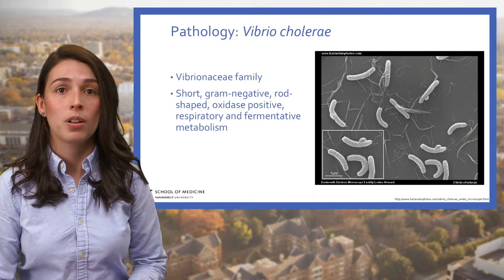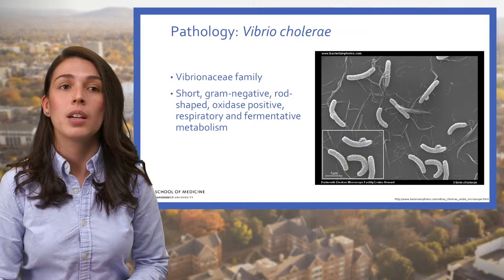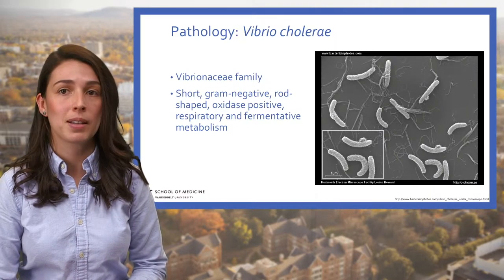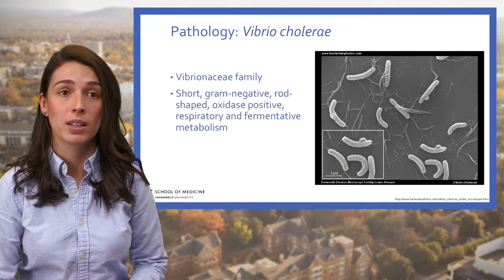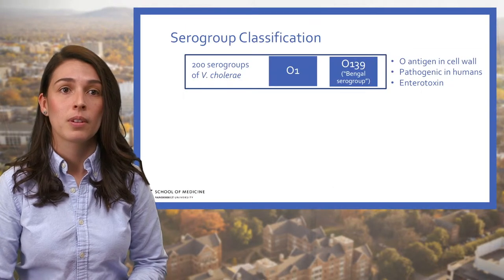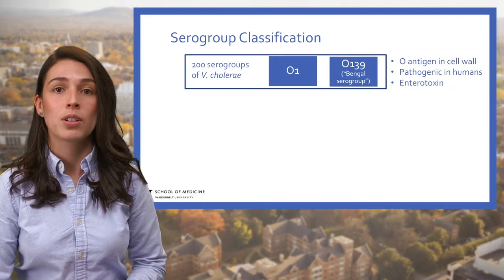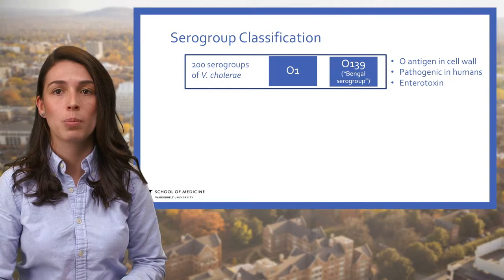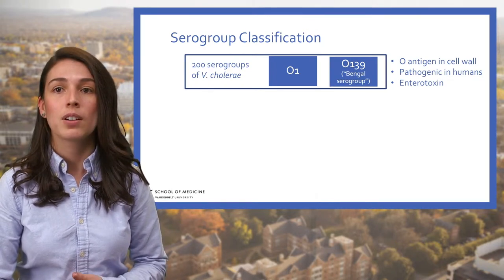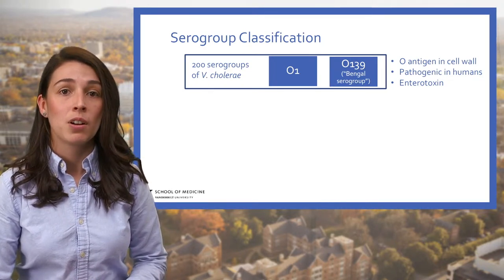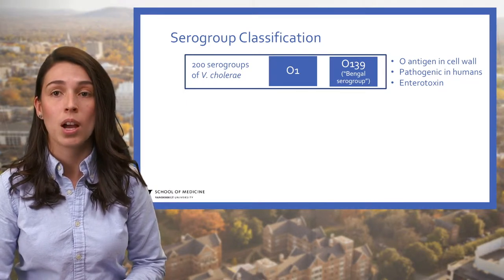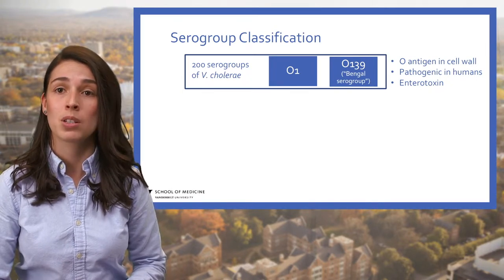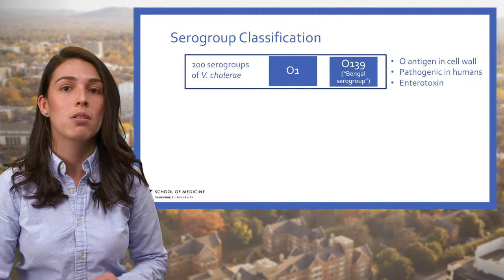Regarding the pathology of Vibrio cholerae, it belongs to the Vibrionaceae family. It's a short gram-negative rod-shaped, oxidase-positive, respiratory and fermentative metabolism organism. There are more than 200 different serogroups of Vibrio cholerae, distinguished based on the structure of a protein called the O antigen in the bacterium cell wall. Several of these groups are pathogenic in humans; however, only two serogroups — O1 and O139 — are known to cause cholera.